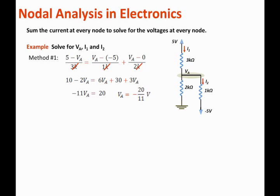Now, let us use method 2 to solve for the nodal voltage. In method 2, I will assume that all the currents are leaving the node. So, the current through the 3K ohm resistor is leaving the node, and that current is equal to (VA - 5)/3K, plus the current leaving the 1K ohm resistor, that is (VA - (-5))/1K, plus the current leaving the 2K ohm resistor, which is (VA - 0)/2K. Those are the 3 currents that leaving the node. The sum will equal to 0.